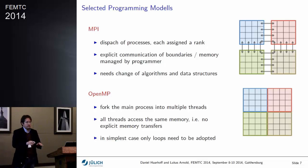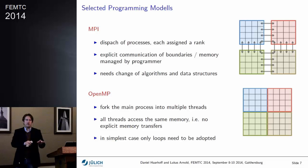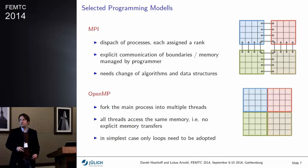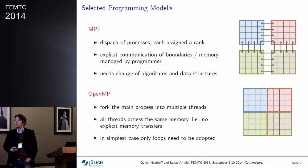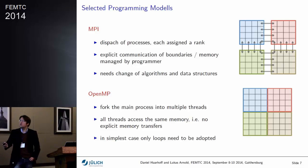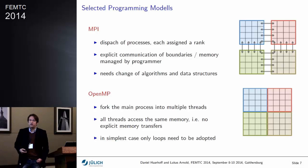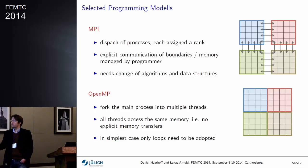Which means you need to really program into your application: MPI rank so-and-so sends this piece of memory over to rank whatever. There is explicit communication done by the programmer. And obviously, if you've got a serial application, you cannot just apply MPI — you need to change your data structures and algorithms to get it to work.